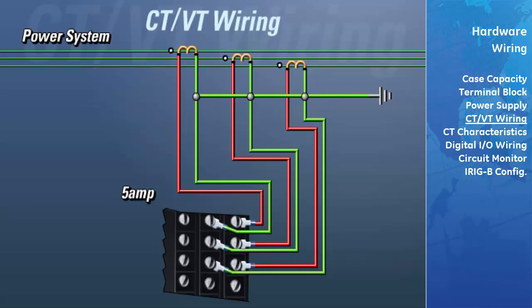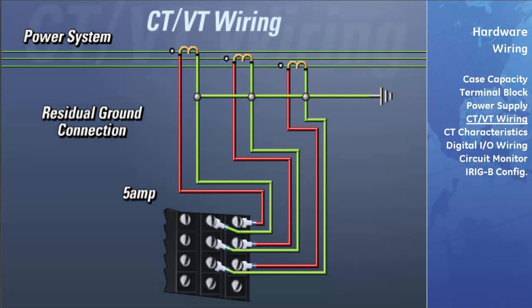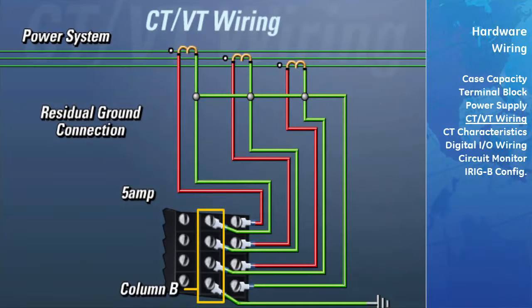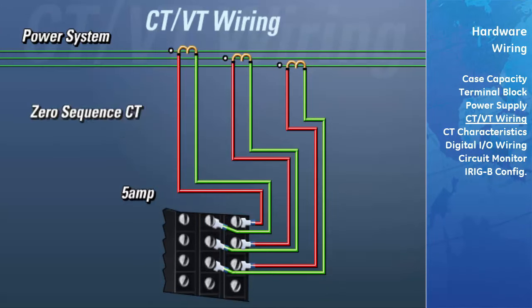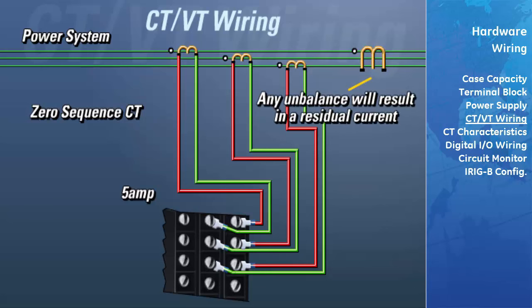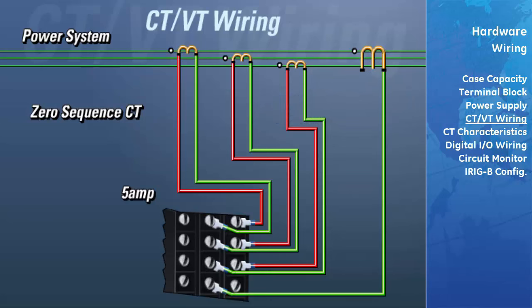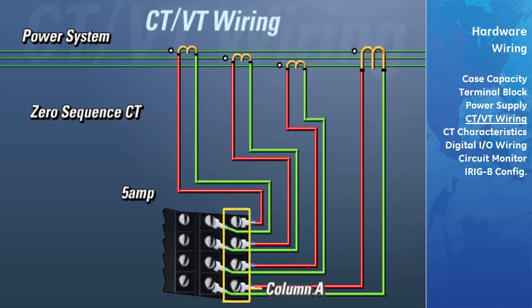There are two different methods of connecting the UR to measure ground currents. The first is the residual ground connection method: take the wire connecting the non-polarity of the phase inputs to ground and connect it to column A of row 4 (or column C of row 4 for 1-amp CT secondaries), then connect column B of row 4 to ground to complete the path for current flow. The second method uses a zero-sequence CT, which has all three phases passing through it; any unbalance results in a residual current in the CT windings. When connecting this CT to the DSP, connect the non-polarity side to column B of that row, and the polarity side to the column matching the CT secondary rating — in this example a 5-amp secondary, so column A is used.